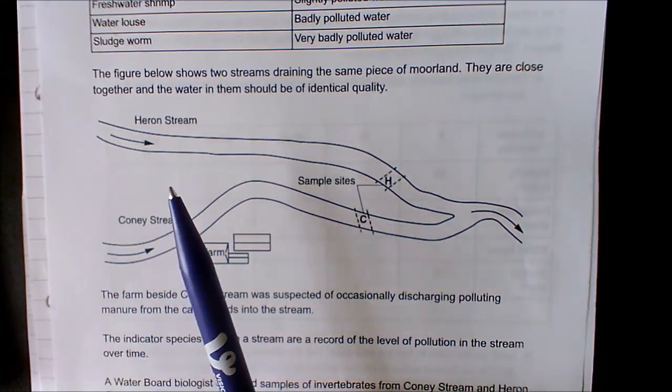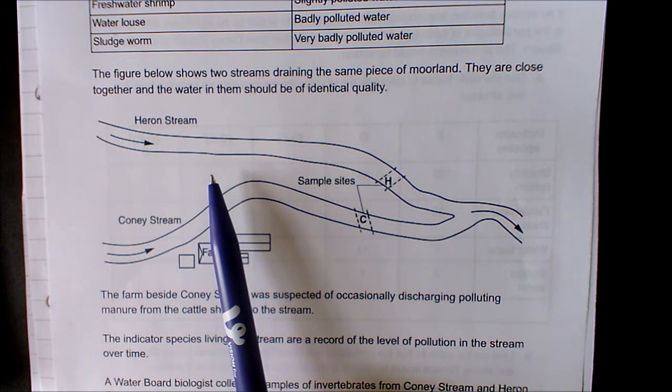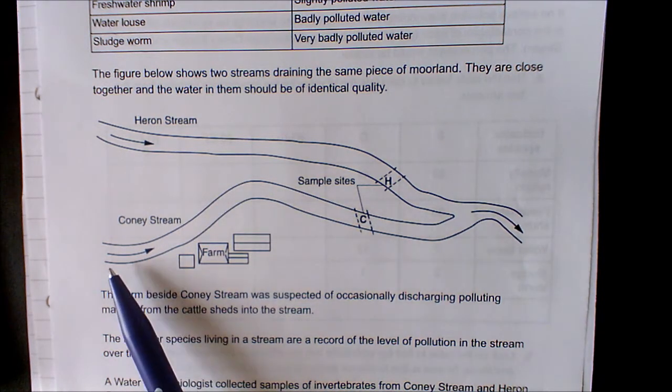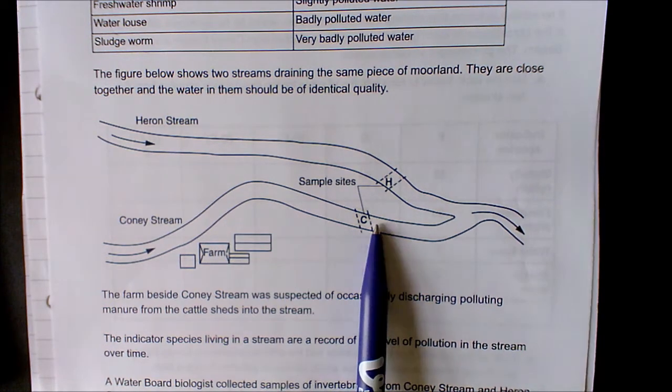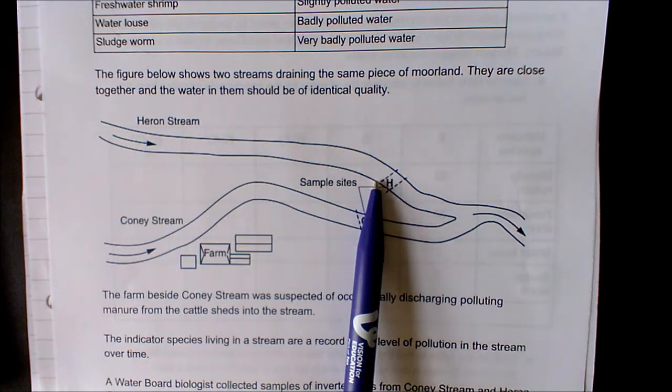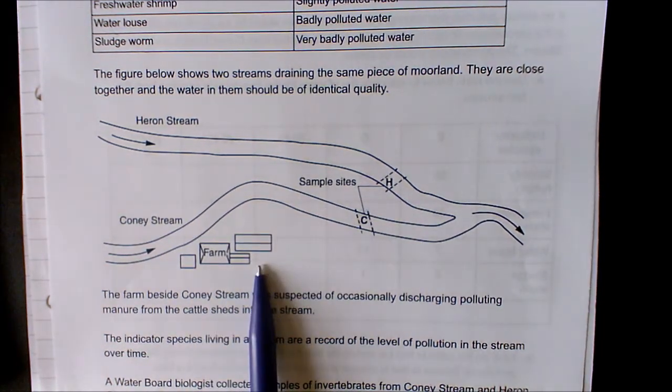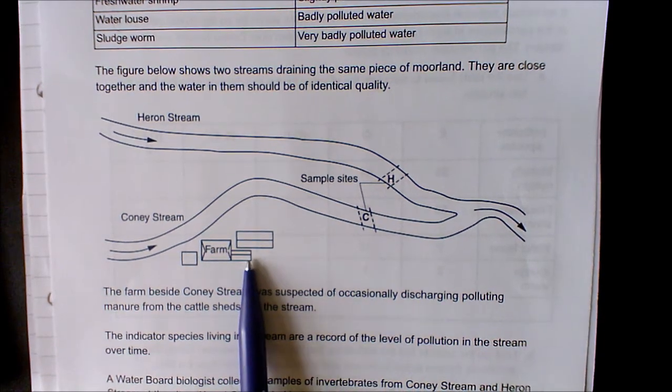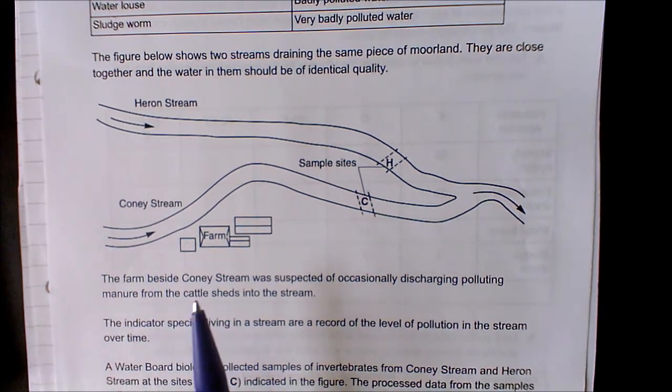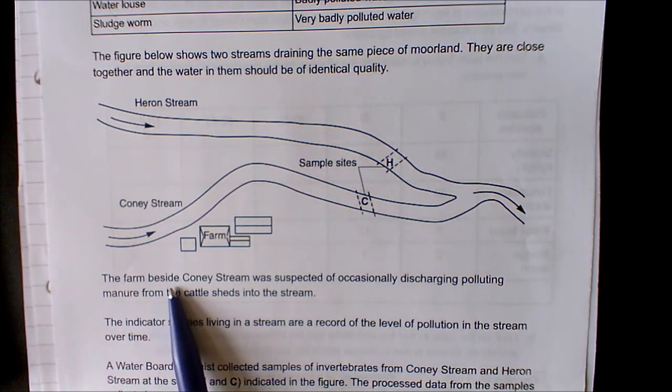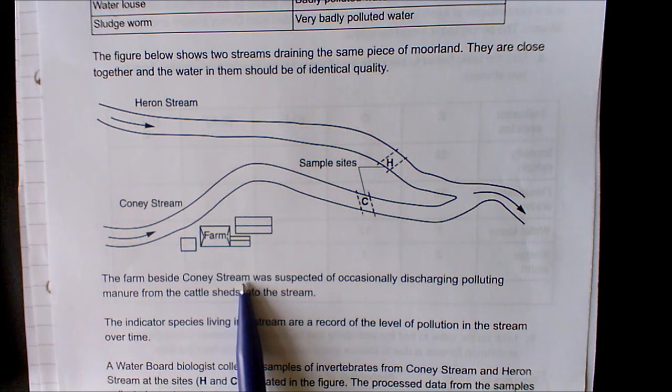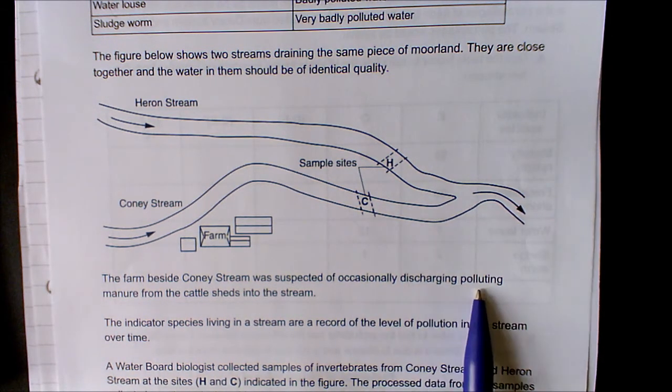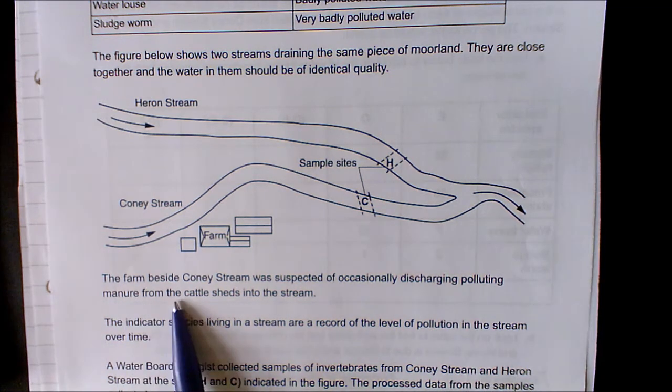They're close together and the water in them should be of identical quality. Here's the Coney Stream and here's the Heron Stream. The only difference between them really is that we've got this farm close to the Coney Stream.